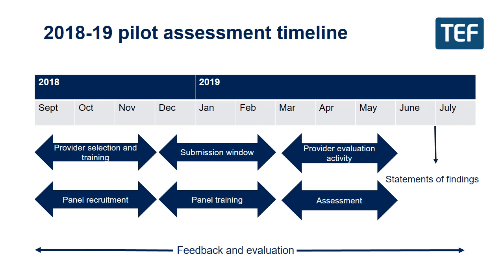Following selection of providers and panellists, between December and February providers will be writing their submissions while panellists are trained and provided guidance. At the end of February, submissions come in and panellists get fully into assessing the information. Formal evaluation activities with providers will follow, though feedback and evaluation continues across all work strands throughout the whole pilot. In this year's pilot we're also generating statements of findings — written narratives explaining how panellists reached their judgments — and we'll be testing different ways of producing these and how useful they are with both students and providers.